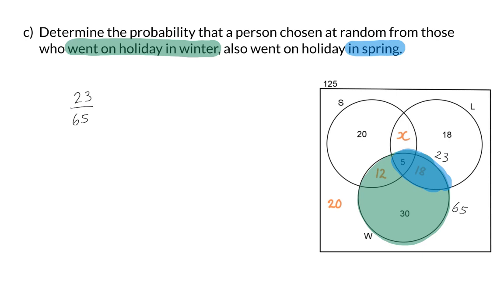From this example, you can see that it is important to determine whether the probability is out of the whole sample space or only a specific part of the sample space, because that value will be the denominator in your probability.